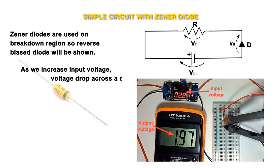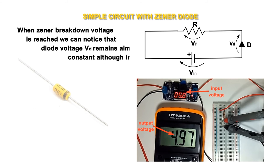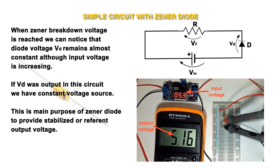Reverse biased diode will be shown. As we increase input voltage, voltage drop across a diode VD increases. Diode is off, there is no current flowing in circuit, so VR remains zero. When zener breakdown voltage is reached,